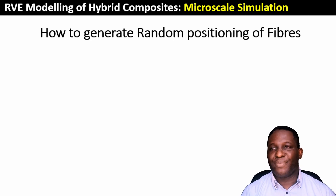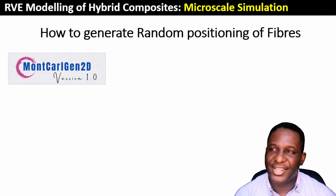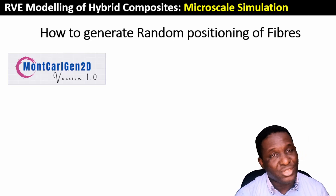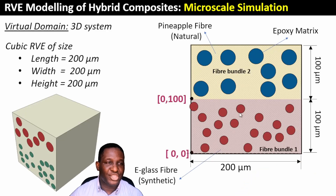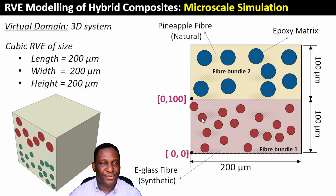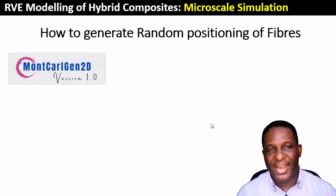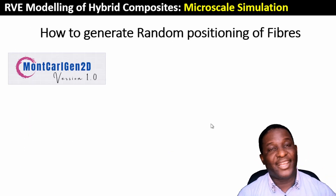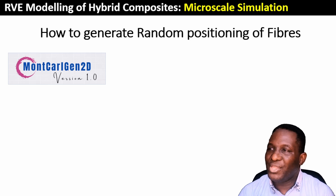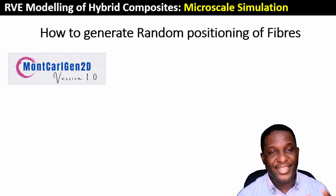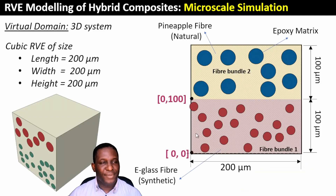To generate the random fiber representation, you can do it manually by finding the X and Y coordinates for every fiber in the system. However, there is an automated code called Multi-CalGen 2D that automates this process and creates a 2D layer-by-layer representation. We are going to use that.